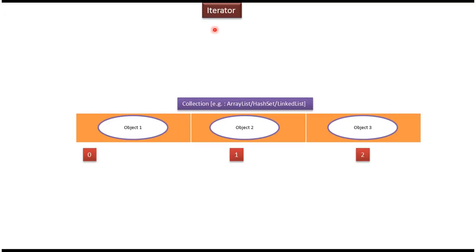In this video tutorial I will cover what is iterator. A collection is nothing but a container which contains a group of objects. Examples of collections are ArrayList, HashSet, LinkedList, etc. If you want to get each element one by one from a collection, then we can use iterator.